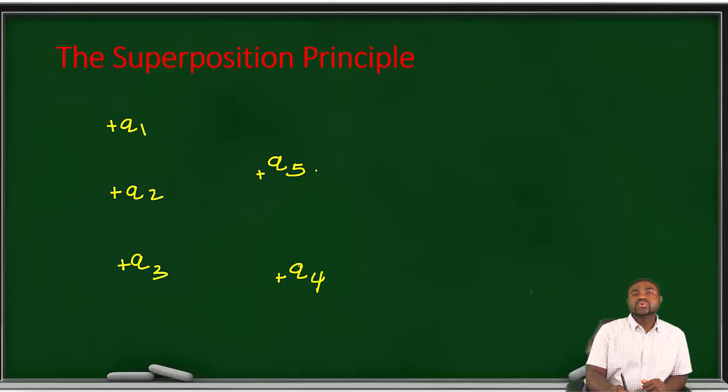This means that Q5 will experience a force in this direction. This is the force exerted by 1 on 5. It will experience a force in that direction. This is the force exerted by 4 on 5.